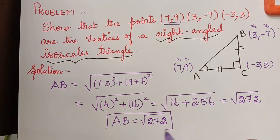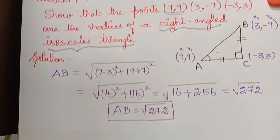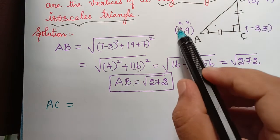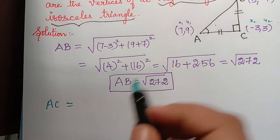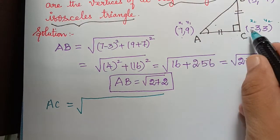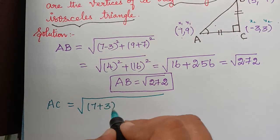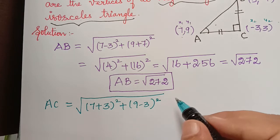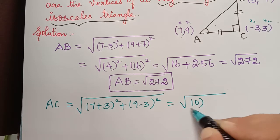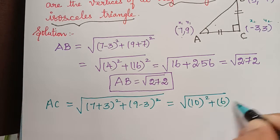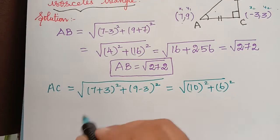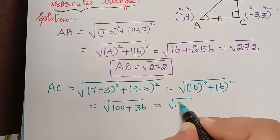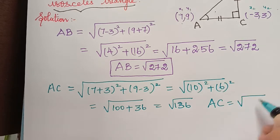Next we find the distance AC. Taking A as (x1,y1) and C as (x2,y2), AC equals the square root of (7−(−3))² + (9−3)², which is (10)² + (6)² = square root of 100 + 36 = square root of 136. Therefore AC = √136.